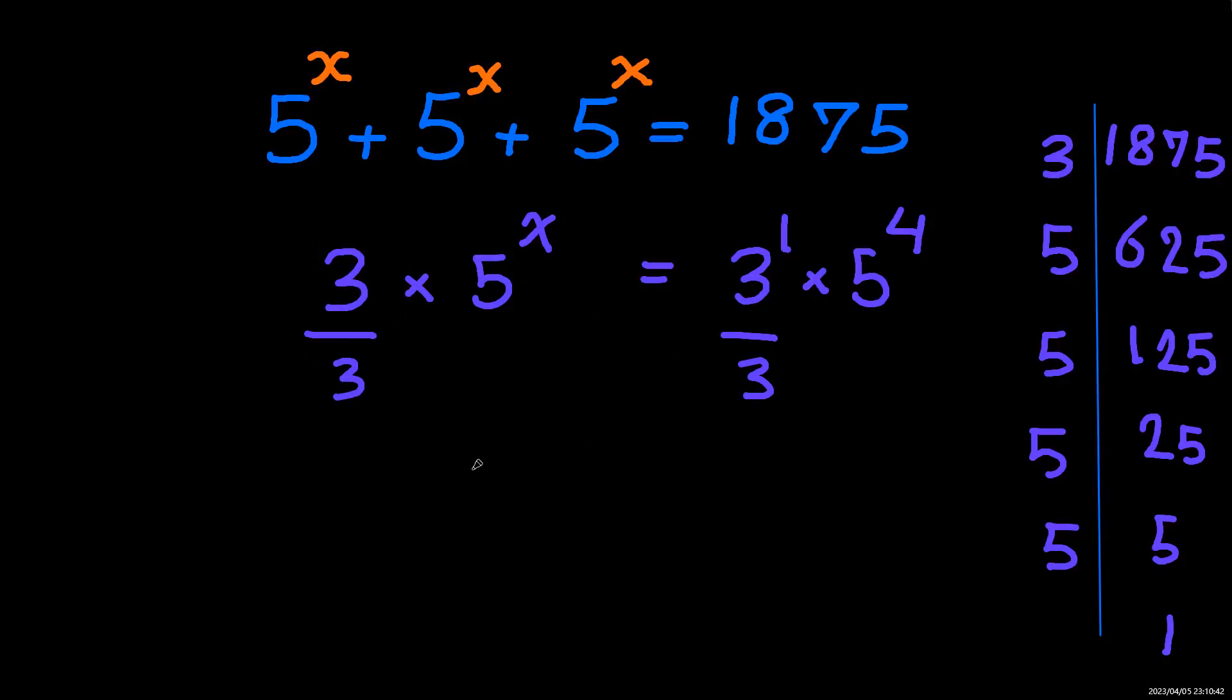After simplification, we're left with 5 to the power of x equals 5 to the power of 4.